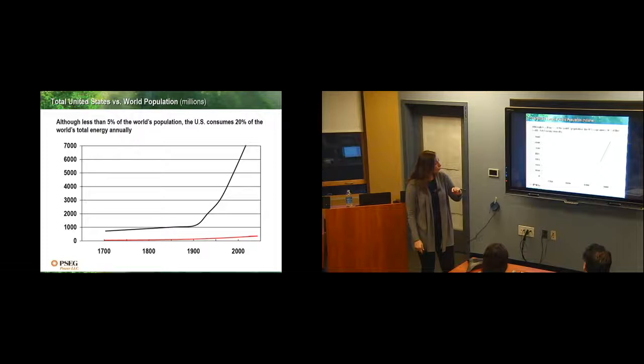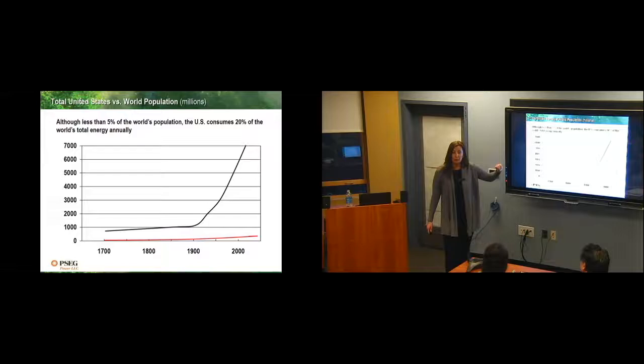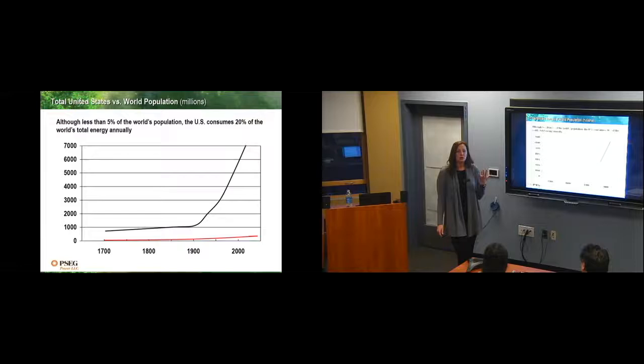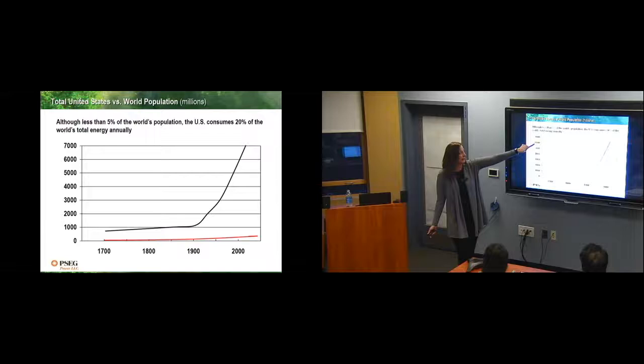So we're going to start by talking about the world's population. The black line represents the world's population. There's over 7 billion people in the world. But the red line represents the United States population. So we're only 5% of the world's population here in the United States. But what's alarming is that we are consuming about one-fifth of the world's energy.